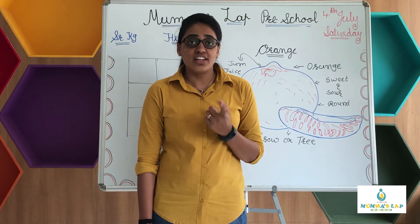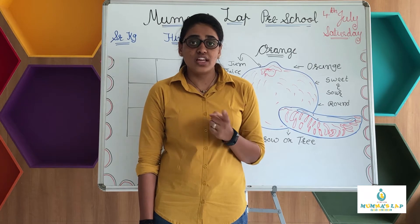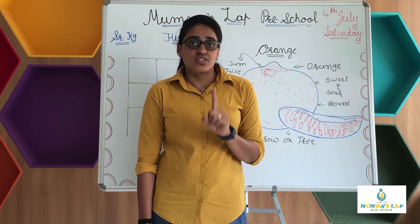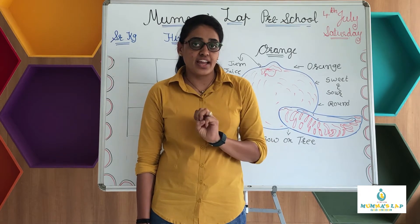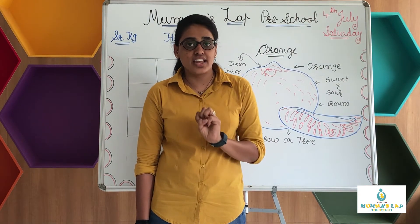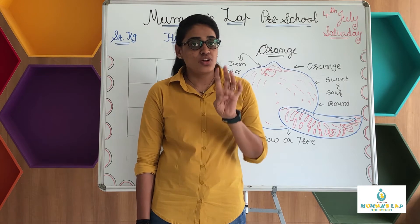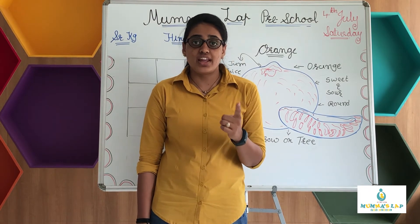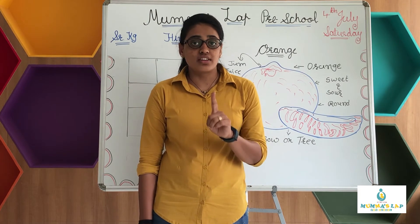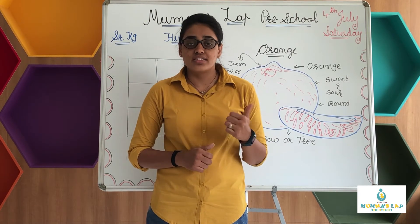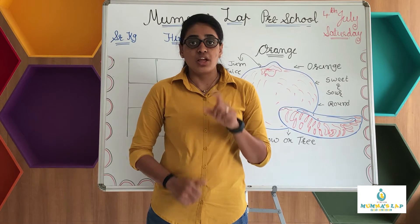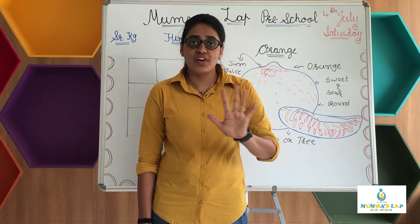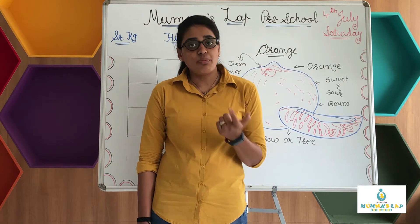Let's revise shapes again. Yesterday we had learned about shapes. Triangle has 3 sides. Rectangle has 4 sides. Square has also 4 sides. But circle has no side. Pentagon has 5 sides, so it's called pentagon.